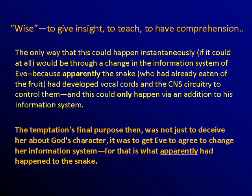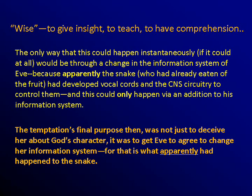The Hebrew word for 'wise' means to give insight, to teach, or to give comprehension. The only way this could happen instantaneously would be through a change in the information system of Eve — because apparently the snake who had already eaten of the fruit had developed vocal cords and the CNS circuitry to control them, which could only happen via an addition to his information system. The temptation's final purpose was not just to deceive her about God's character, but to get Eve to agree to change her information system.